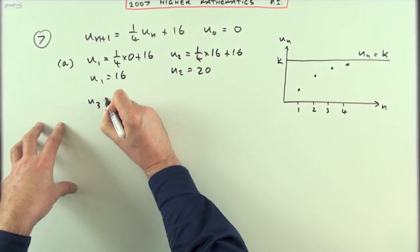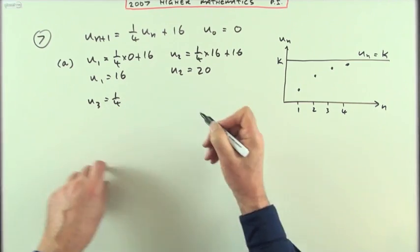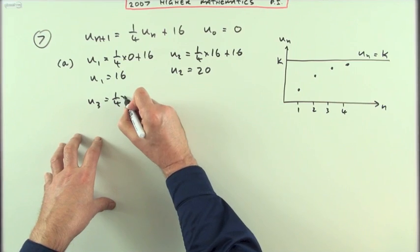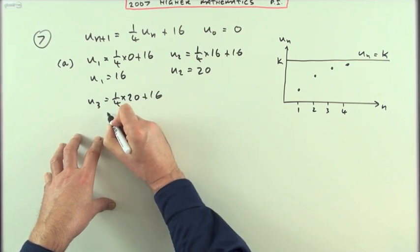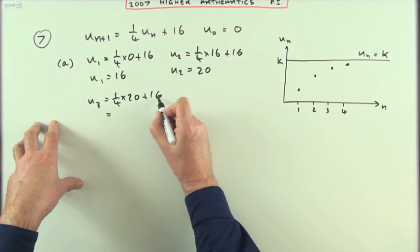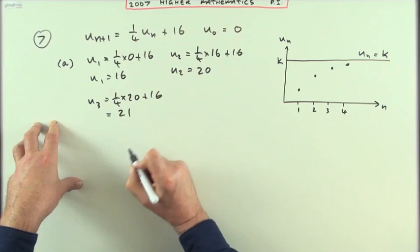And then U3 is going to be a quarter of the term before it, which was 20. So it's a quarter of 20 plus 16. A quarter of 20 is 5, and 5 and 16 makes 21.